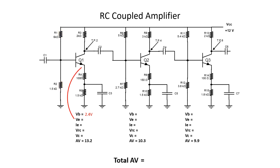Finding the voltage on the emitter is easier because we know that value is just 0.6 less than what's on the base, so you should have 1.8 volts there. Pay attention to R4 and R5 — to figure out the total current, we have to divide 1.8 by their sum, which in this case is 1.6 kilohms, giving you a value of 1.25 milliamps. The next part is the voltage drop of the collector resistor R3 — take that total current and multiply it by R3's value of 2k, which should give you 2.25 volts.